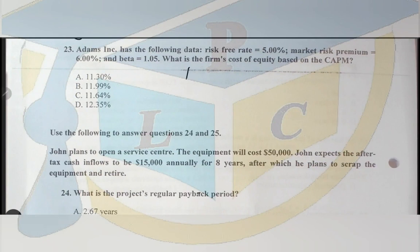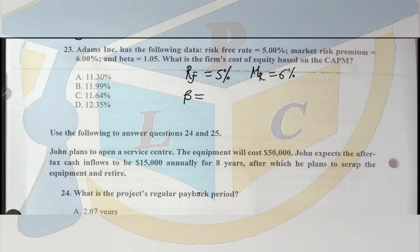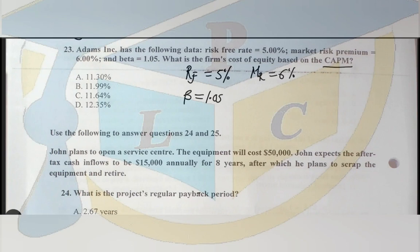Let's move on to question 23. Adams Incorporation has the following data: risk-free rate (Rf) is 5%, market risk premium is 6%, and beta is equal to 1.05. What is the firm's cost of equity based on CAPM?